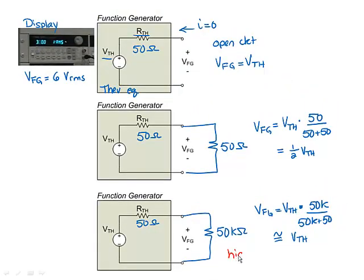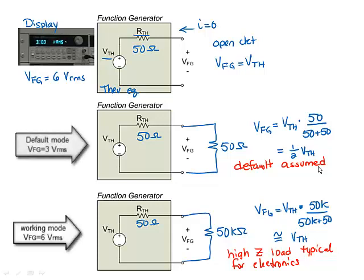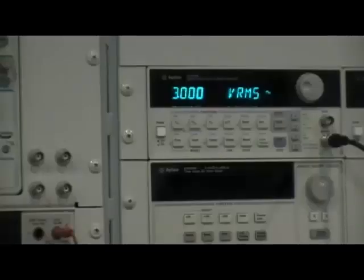In electronics, we typically build circuits with high values of impedance, so we are working in a high Z mode. The conflict occurs because the function generator manufacturer assumes we'll be working with 50 ohm loads. So the default mode of the function generator is to display the output voltage if a 50 ohm load is connected. In the default mode, the actual output VFG is 6 volts RMS, but since the display assumes that this value will be half, the function generator will display 3 volts RMS. To avoid confusion,